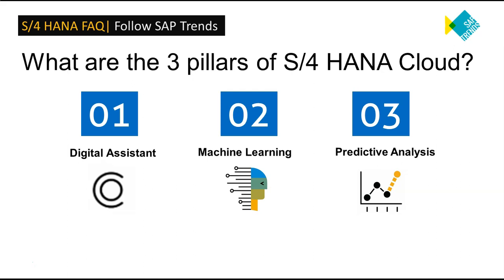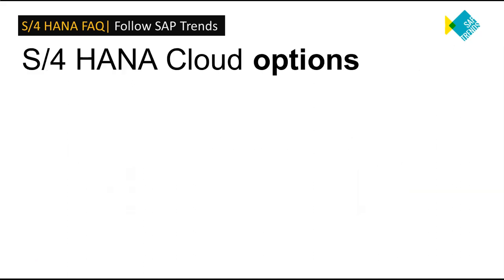SAP S4 HANA Cloud is available in three options: SAP HANA Cloud (SaaS option), SAP HANA Cloud X option, and SAP HANA Private Edition.